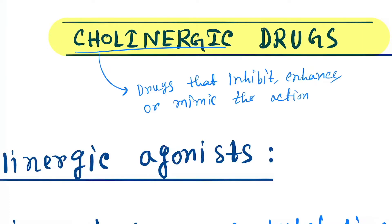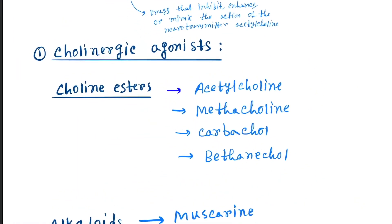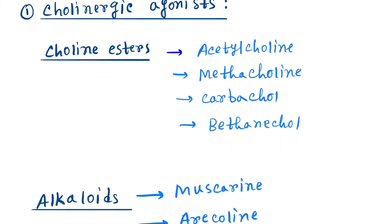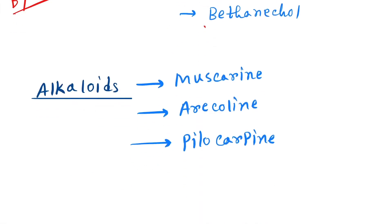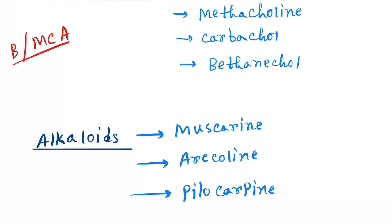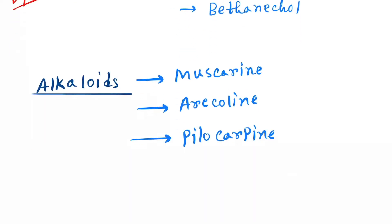Now let's learn the drugs. First is cholinergic agonists. The mnemonic is BMCA or BCA: B for Bethanechol, M for Methacholine, C for Carbachol, A for Acetylcholine. BCA or MCA is a bachelor degree. Next is alkaloids, where the mnemonic will be MAP.